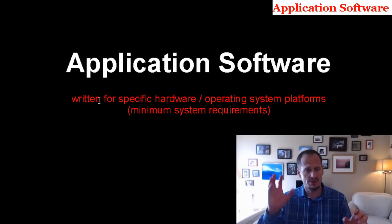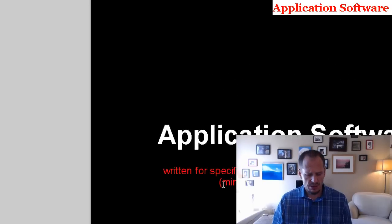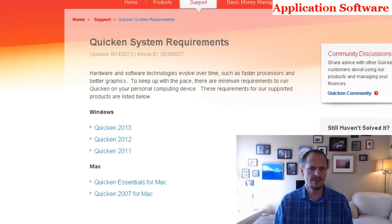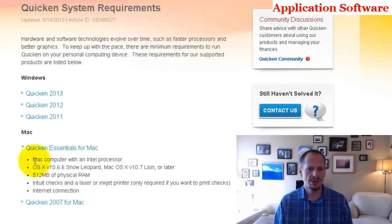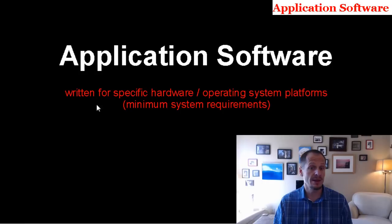That's why when you look up minimum system requirements, you see things like 'you must be running this operating system.' When we look that up for Quicken, we see the minimum system requirements for Windows — it's written for Windows — and they also wrote it for the Mac, requiring a specific Mac OS to run the Mac version. The important thing to know is that application software is written for a specific platform.